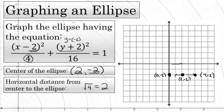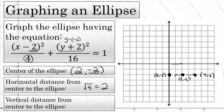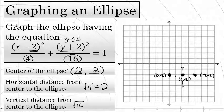The final piece that we need before we can draw the graph is the vertical distance from the center to the edge of the ellipse. The number of units up and down from the center to the top and bottom of the ellipse. And that, as you might suspect, is the square root of the number below y. In this case, that value is 16 and the square root of 16 is 4.